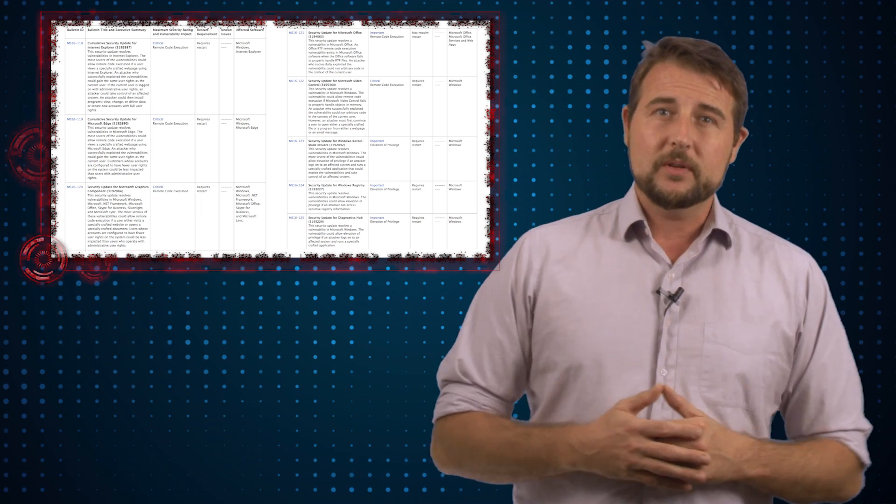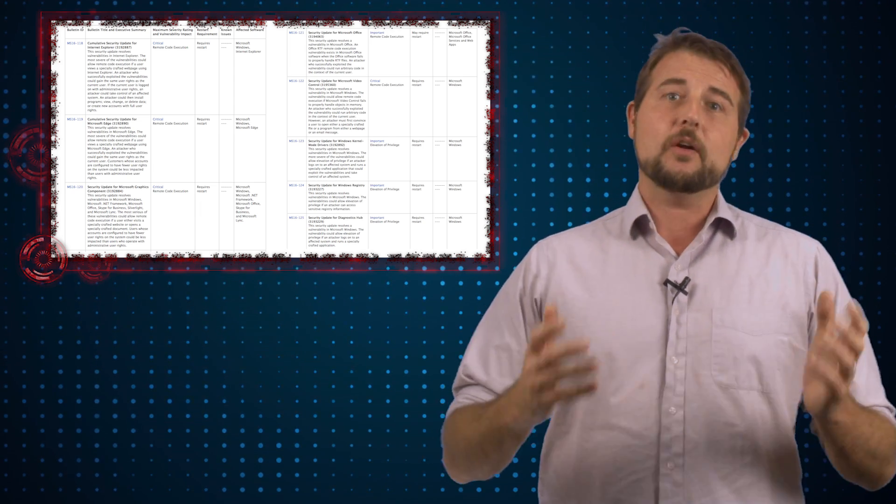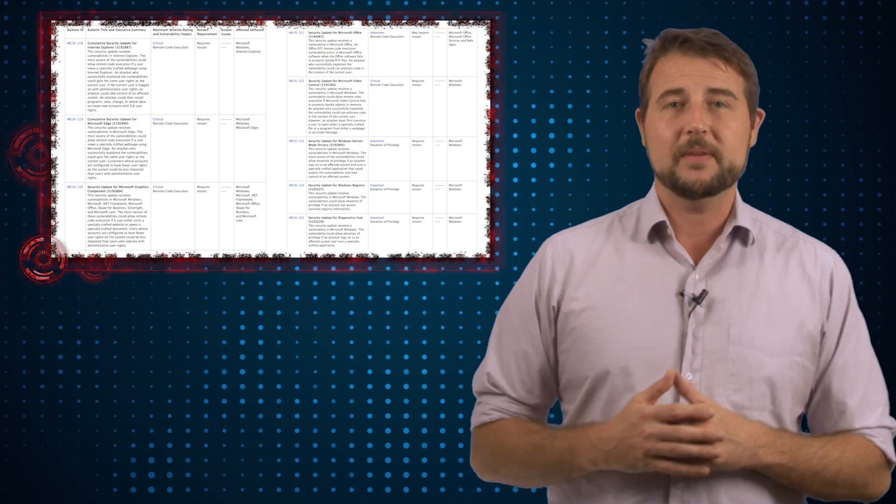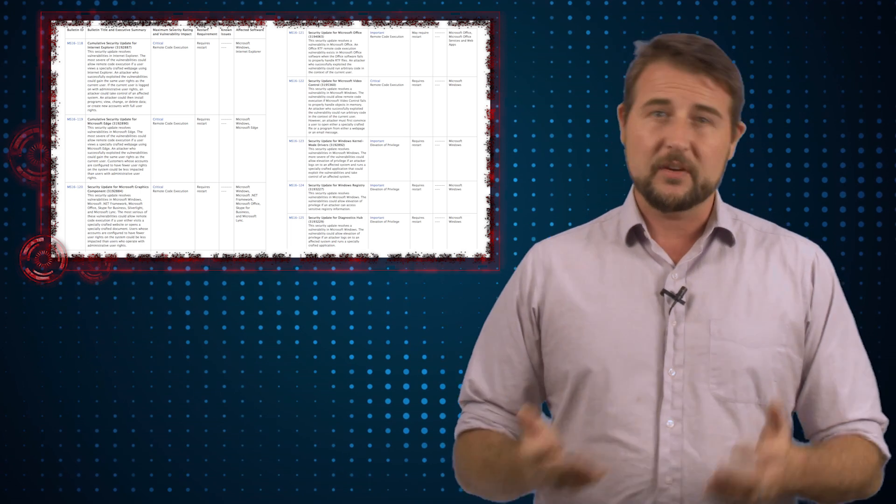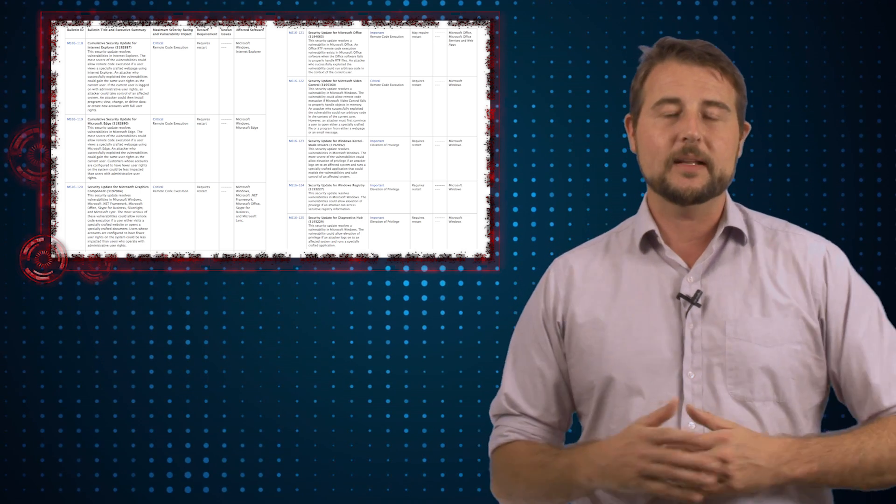Now, they rate five of the bulletins as critical, four as important, and one as moderate. I don't have time to talk about all the vulnerabilities they fix, but whenever Microsoft has a critical update, that means at least one of the vulnerabilities allows a remote attacker to execute code on your computer, so it's typically a big deal.